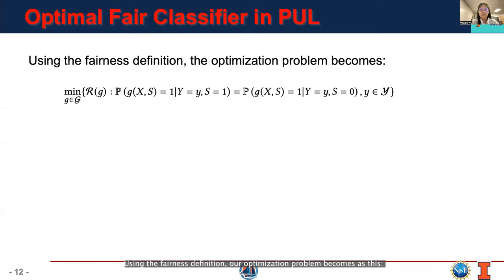We say that the classifier g(X,S) satisfies equal opportunity if it only shows the same true positive rates. Thus, we can see that EOP is actually a weaker constraint compared with EO. Using the fairness definition, our optimization problem becomes at least: We want to minimize the risk R(g), where the classifier g should satisfy some fairness-related constraints.